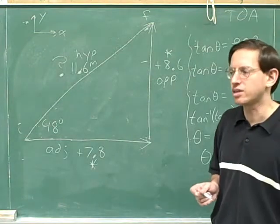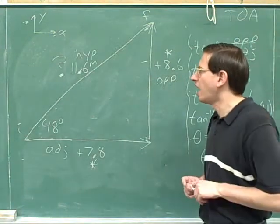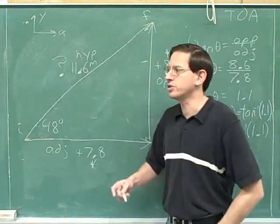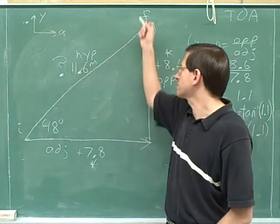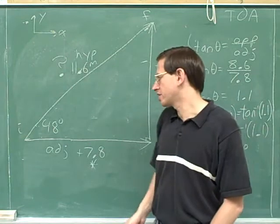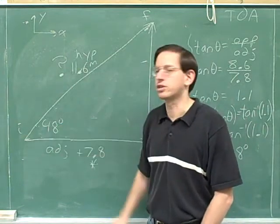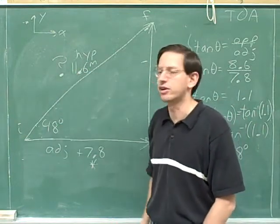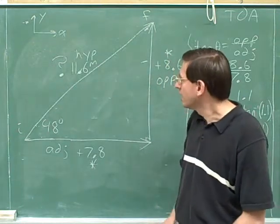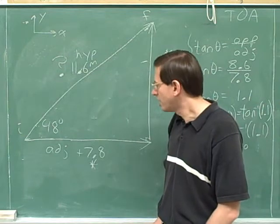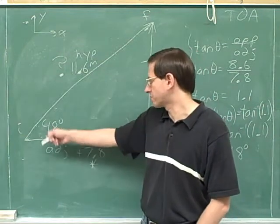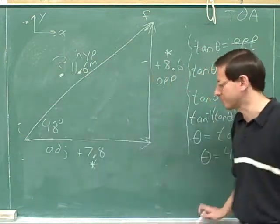So now we've really completely analyzed the problem. And we know that at the end of our two portions of the journey, we're going to end up 11.6 meters from where we started in a direction that makes an angle of 48 degrees with the horizontal. So now we've really specified our overall displacement vector. We've traveled 11.6 meters from the initial position in a direction that's 48 degrees above the horizontal here.